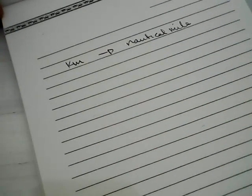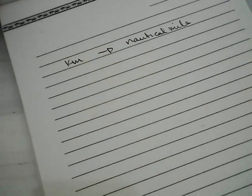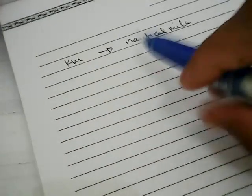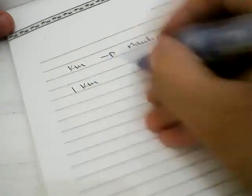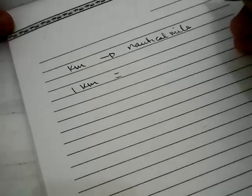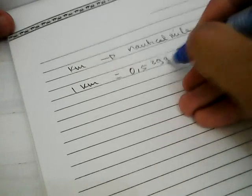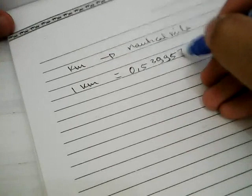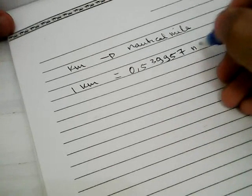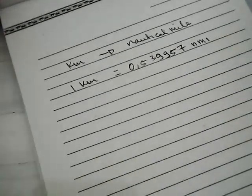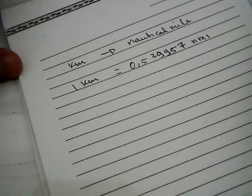Before we are dealing with our problem to convert kilometer to nautical mile, we need to know that 1 kilometer is equal to 0.539957 nautical mile. Now, for example,